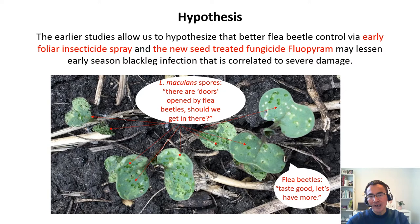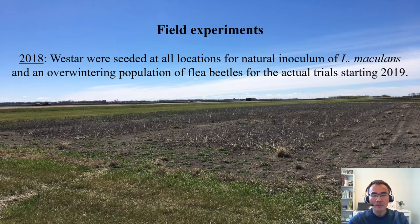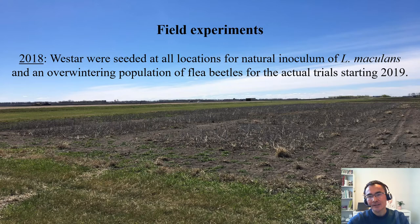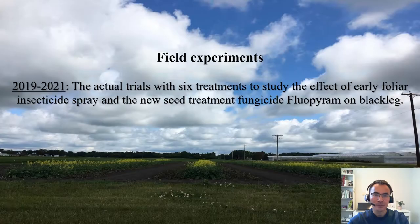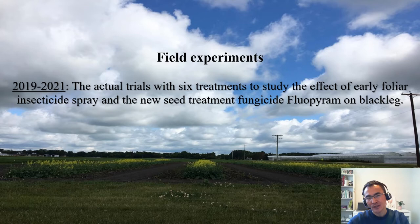Therefore, we hypothesize that early insecticide spray and new fungicide seed treatment may alleviate black leg infections. In other words, if flea beetles are opening the doors for maculans spores to get into canola plants, are we expecting to see more black leg infections? To test this, we set up four-year field trials. In 2018, as a prep trial, WESTA were planted at all locations to create a natural inoculum of L. maculans, as well as to cultivate an overwintering population of flea beetles. This was a snapshot of canola stubble footprints taken from Carmen in 2018.